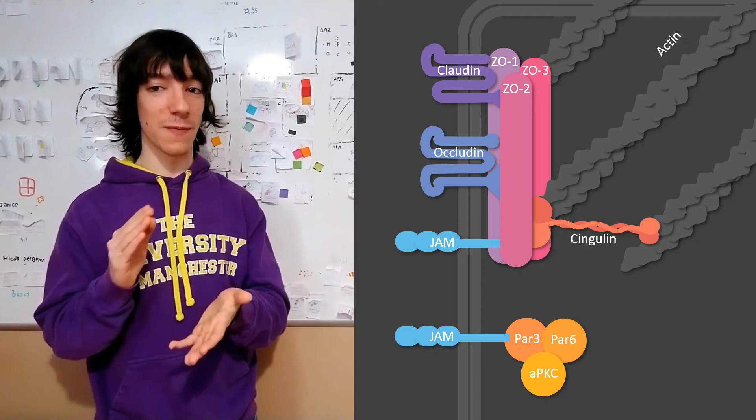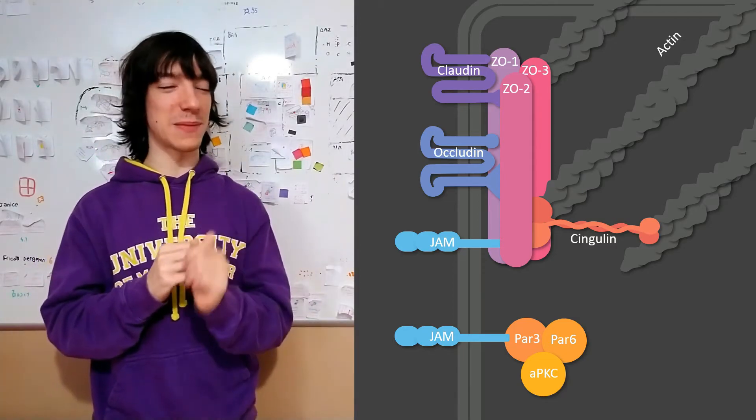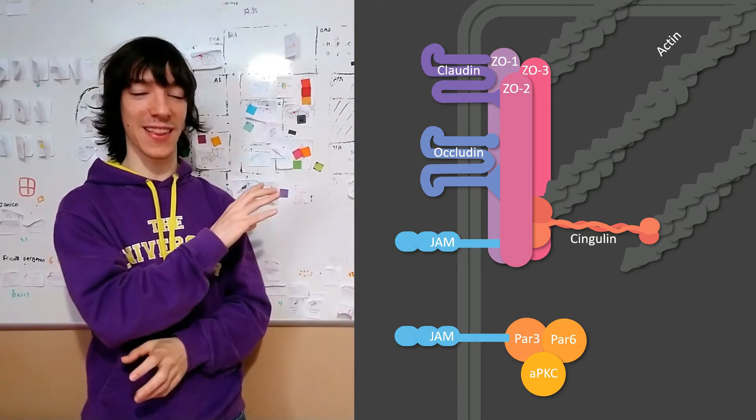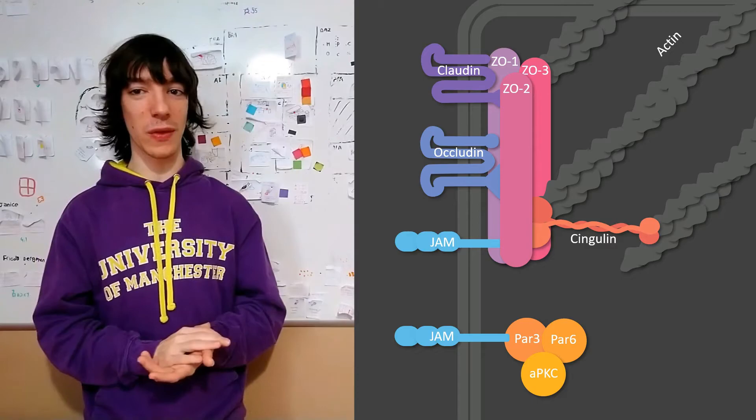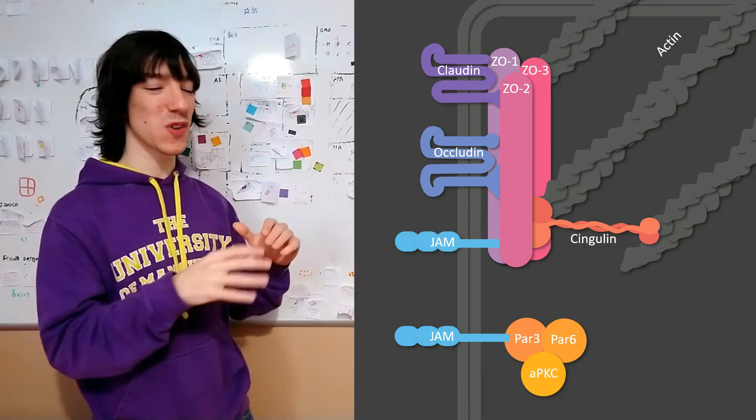Of course, in invertebrates who don't have JAM proteins, there are other mechanisms to bring the PAR3, PAR6, aPKC complex to the apical side, but we will see them in future videos. I just thought it was nice to connect it now that we were talking about JAM proteins.